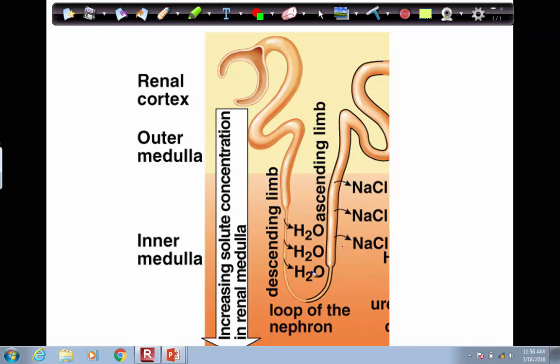The filtrate at this point, when we get to the top of the loop of the nephron, is now called tubular filtrate.